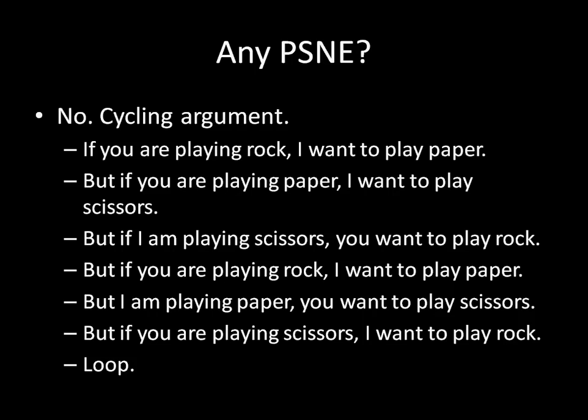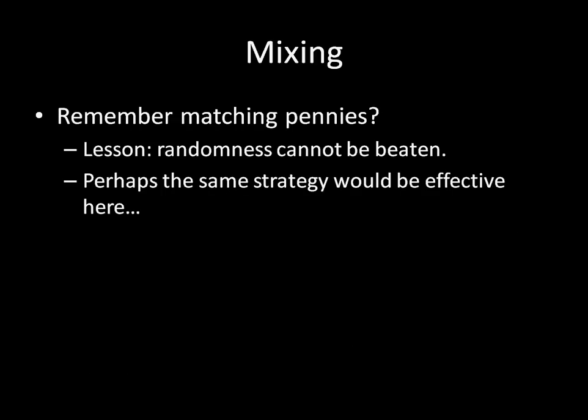Since there's no pure strategy Nash equilibrium, we're going to have to look for Nash equilibria in mixed strategies. I want to refer back to matching pennies for intuition. The lesson from matching pennies was: when all outcomes are equally good or equally bad, randomness can't be beaten. If you randomize with equal probability, the best your opponent can do in expectation is draw. So perhaps the same idea applies to rock-paper-scissors — instead of mixing between two strategies, you mix evenly among all three.